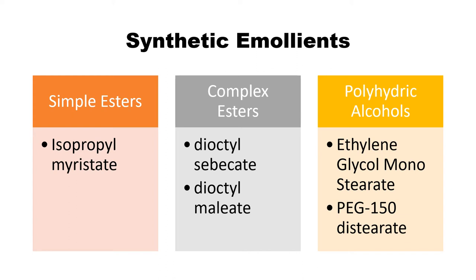The third category is polyhydric alcohols, which have large complex molecules and produce emollients like ethylene glycol monostearate or the PEG (polyethylene glycol) series such as PEG-150 distearate. So depending on the complexity of the acid and alcohol, different types of emollients with different molecular structures can be synthesized in the lab.